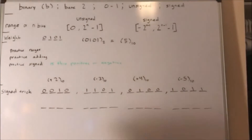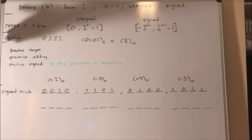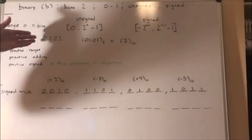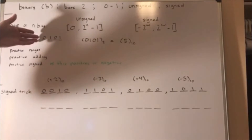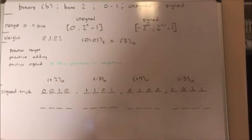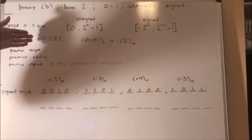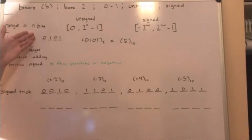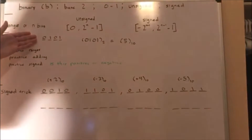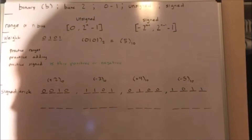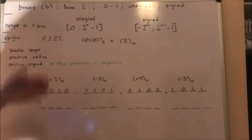The next point is weight. Here you have a 4-bit binary number, and you'll know how to use it by understanding what I mean by weight.